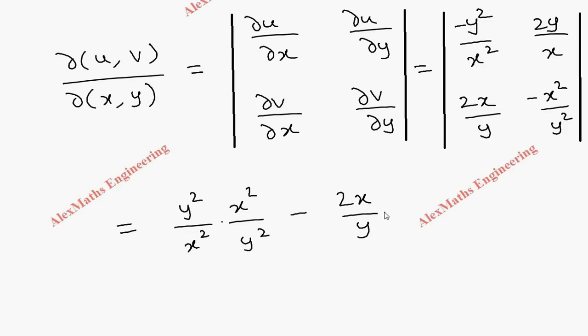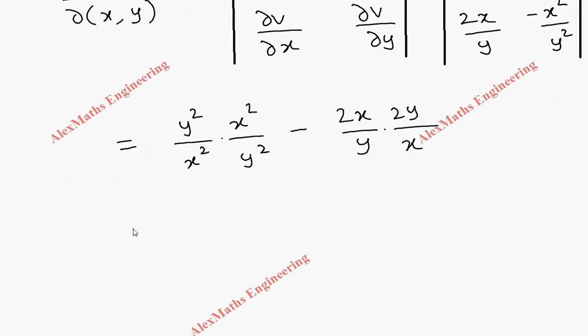In the first term we can cancel x² with x², y² with y², so we're left with 1. In the second term, y and y cancel, x and x cancel, leaving 2 times 2 which is 4. Finally, this is 1 minus 4 equals -3.